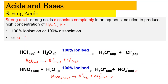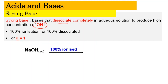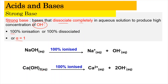For strong base: it also dissociates completely, producing OH⁻ ions, with 100% ionization (α = 1). For example, NaOH aqueous dissociates 100% to Na⁺ aqueous and OH⁻. Another example is Ca(OH)₂, where calcium is from Group 2 — it gives Ca²⁺ aqueous and 2 OH⁻ when fully ionized. The equation must be balanced, and the state symbols are compulsory.